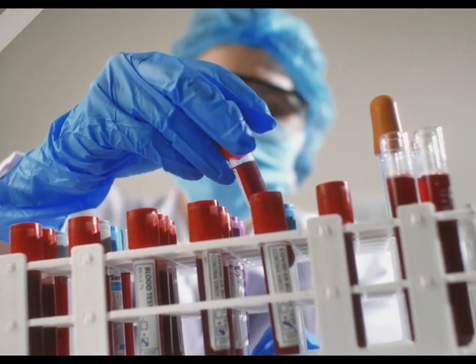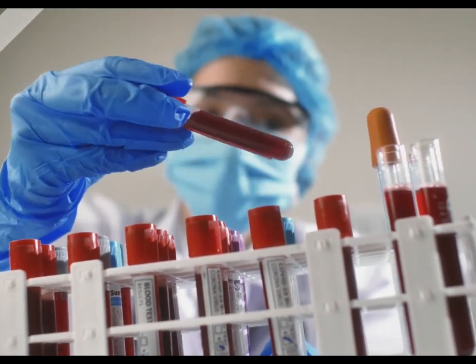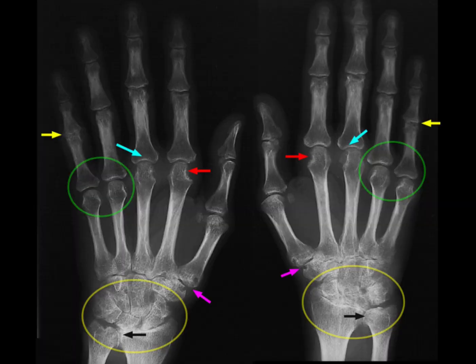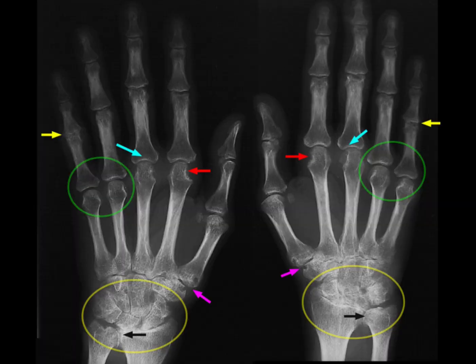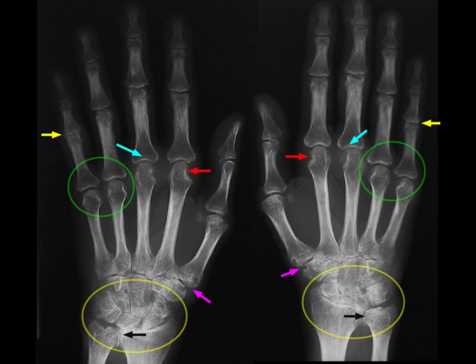Radiological Tests — X-rays can show bone erosion and other changes in the joints as the disease progresses. Ultrasound and MRI can detect arthritis and bone erosion at earlier stages than X-rays.